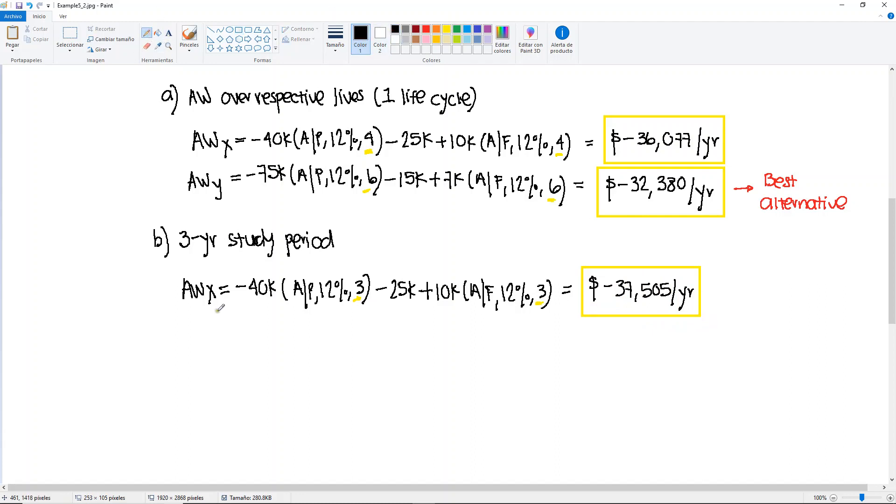And then our second one, the annual worth of Y. Same process: minus $75,000. Find A given P, 12%, and this is also for three years. Minus the uniform A. Plus the salvage value. Find A given F, 12%, and will also be three. For this one, you will get minus $40,299 per year. Again, let me highlight that there's a three here, a three here, and they both match the study period.